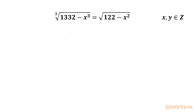Welcome to Infigyan, my dear friends. In this video, we have another very interesting and challenging question from Radical Equations. It is: cube root of (1332 minus x cubed) equal to square root of (122 minus x squared), and we will be solving for integer solutions.